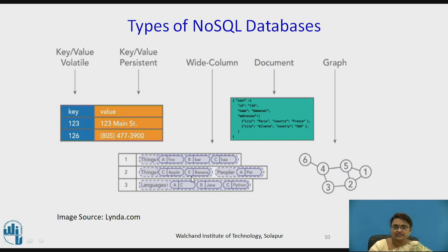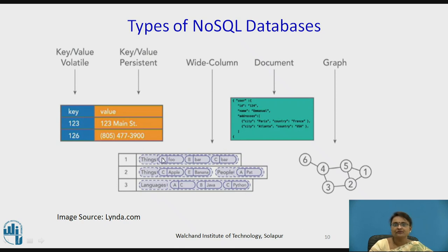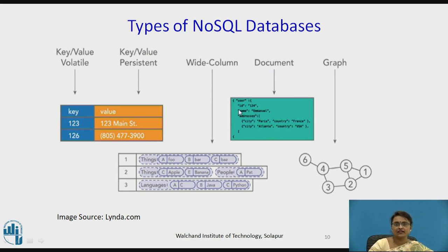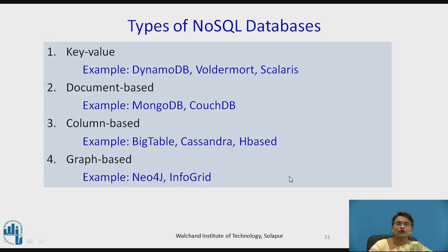Next is wide-column or column-based data, where every column has its own identification and is supported by data along with its metadata. Next is document-based data, represented using opening and closing brackets where data and metadata are given together — every data entry is supported by its attribute name. Finally, graph-based databases represent interconnections and relations in a graphical format.